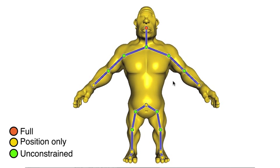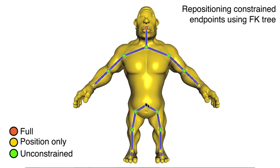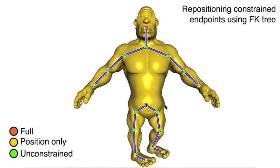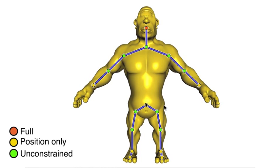Our method infers the remaining handle degrees of freedom by minimizing the elastic energy of the deformed mesh. We show a number of scenarios where this simplifies user interaction. In these scenarios, we use different colors to denote different user constraints on handles.